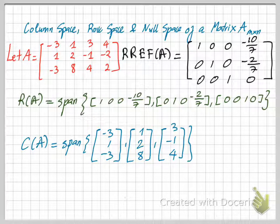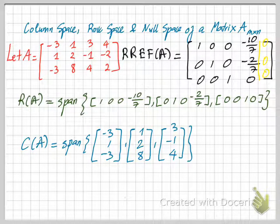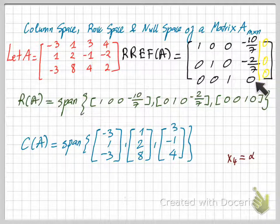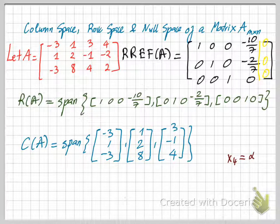For the null space of A, first we have to augment the reduced row echelon form of A with zero, because the null space is the solution of the homogeneous system Ax equals zero. Then we can solve for the system, since this vector is a linear combination of the other three vectors.